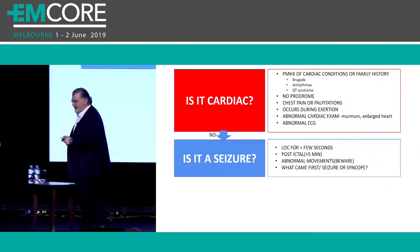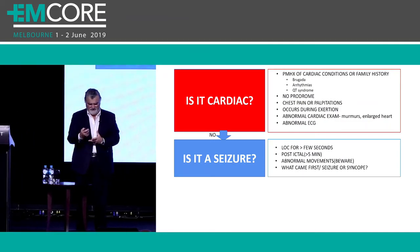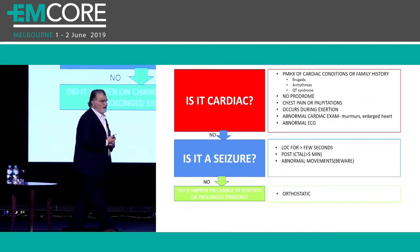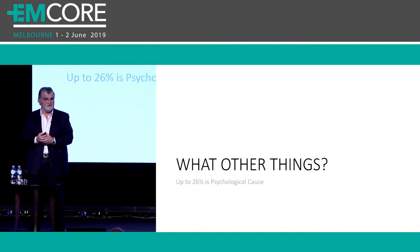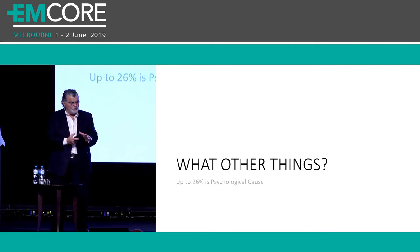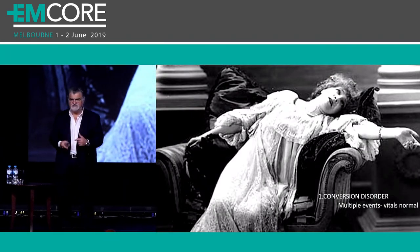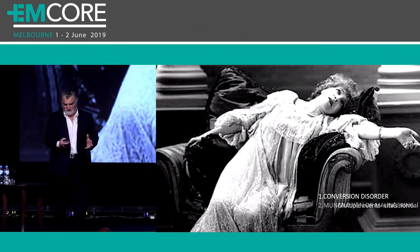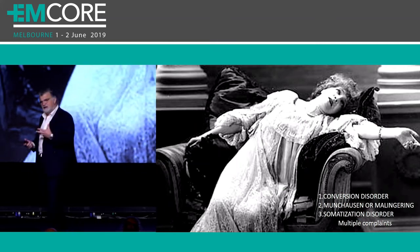So: is it cardiac? If not, is there a neurological cause — with tongue biting and other features if it's a seizure? If not, is it orthostatic? There's an algorithm based on the literature. About a quarter of these cases can be psychological — kids who become sick because of or before something happening at school. Let's make sure we don't miss the organic cause, but also be aware it could be a conversion disorder where kids have these episodes repeatedly with nothing abnormal, malingering, or a somatisation disorder where kids have multiple complaints.